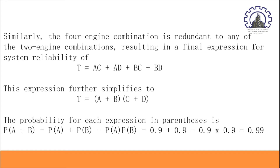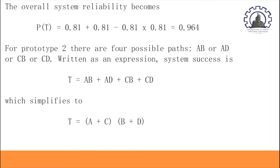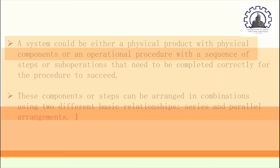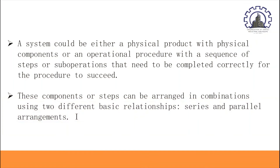Moving on to reliability. A system could be either a physical product with physical components or an operational procedure with a sequence of steps or sub-operations that need to be completed correctly for the procedure to succeed. These components or steps can be arranged in combinations using two different basic relationships: series and parallel arrangements.